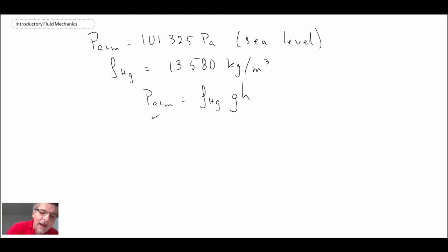We know P atmosphere, we know the density, we know the gravitational constant, so that can enable us to determine how high that column should be. And when we do that, we get 760.58 millimeters of mercury for one atmosphere pressure.